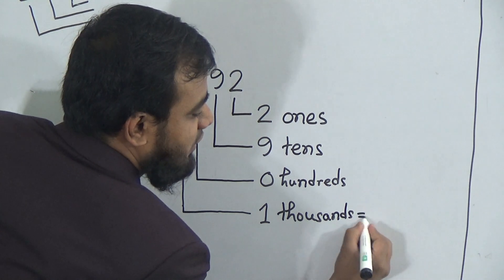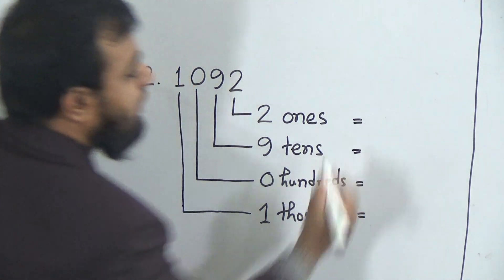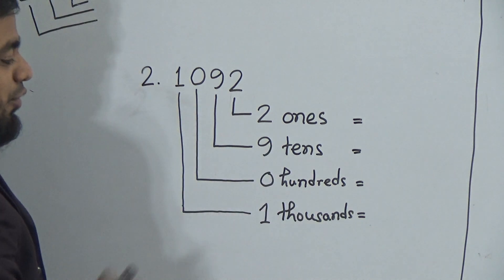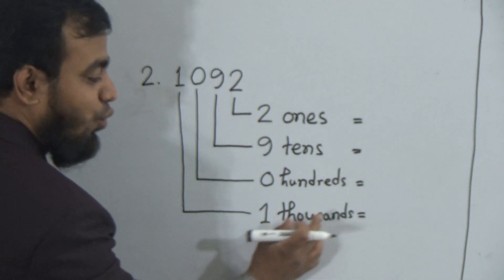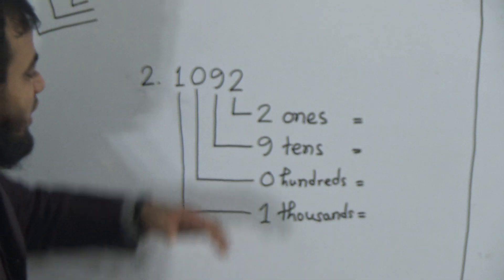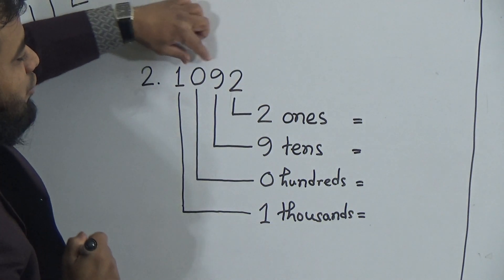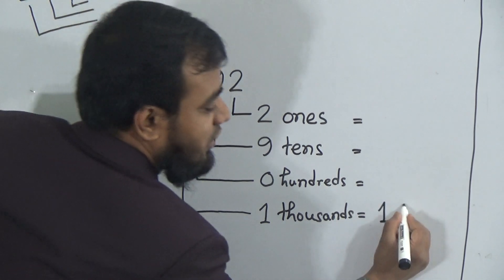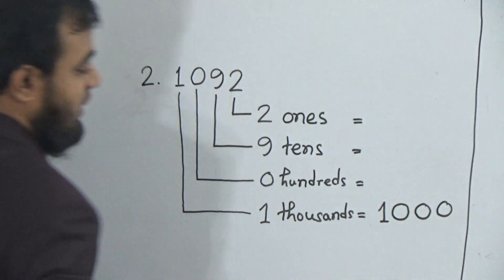Now we give the equal signs here. We should write down the number from the bottom. This is 1000 — to write 1000 we write 1 and then triple zeros. After 1, we have 1, 2, 3 digits, so after 1 we write 3 zeros. This indicates 1000.